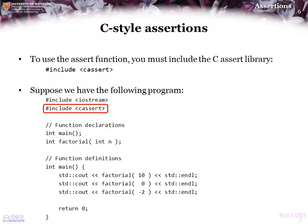However, now we see that we are calculating 10 factorial, 0 factorial, which should evaluate correctly. But we also see that we are calculating negative 2 factorial, which is invalid. So if we were to compile and execute this program, this is the following output.